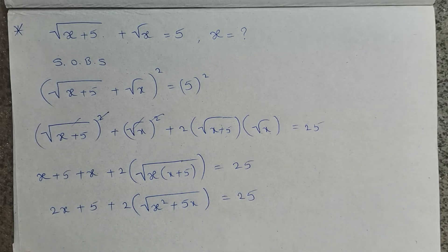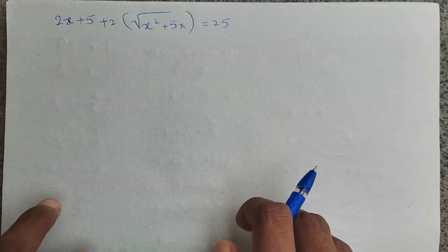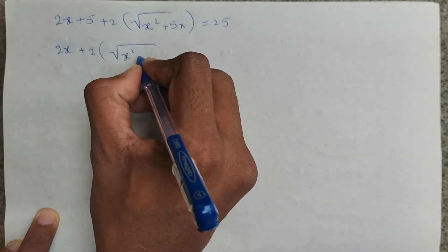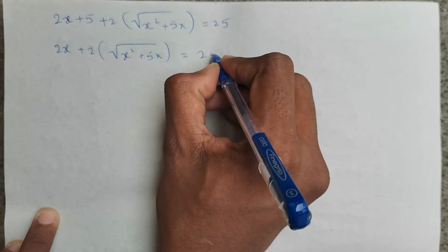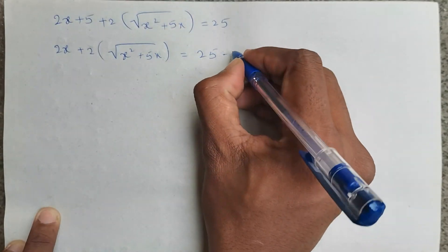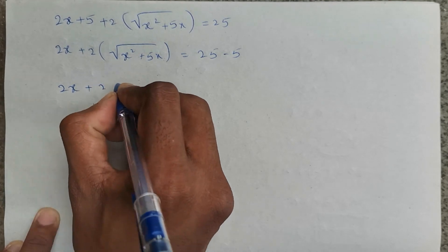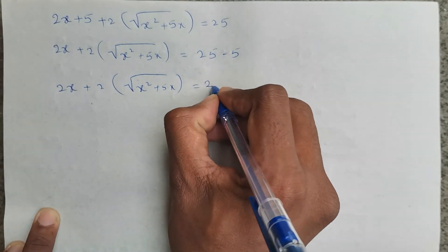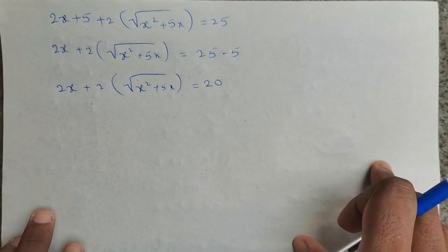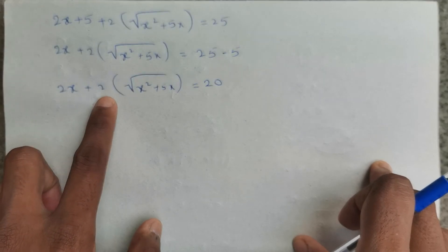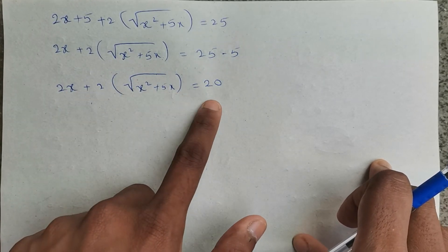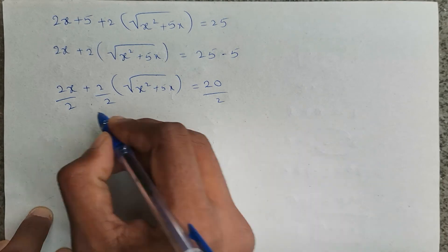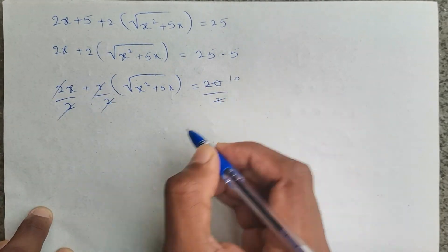Taking 5 to the right side gives 2x plus 2 times root of x squared plus 5x equals 25 minus 5, which is 20. Every term is divisible by 2, so dividing through by 2: the 2s cancel on each term, and we get x plus root of x squared plus 5x equals 10.